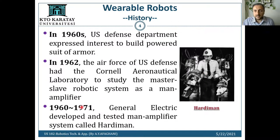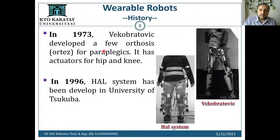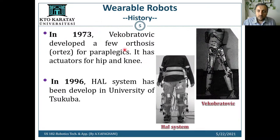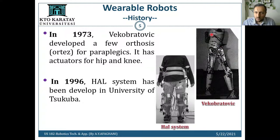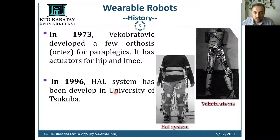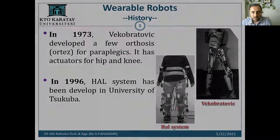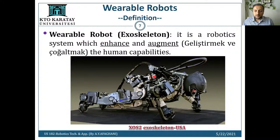In 1973, a country — I think Czechoslovakia, somewhere in Europe — developed active orthoses for paraplegics, for disabled people. It had actuators for hip and knee. In 1996, the HAL system was developed at the University of Tsukuba in Japan — the university I graduated from — for rehabilitation and human assistance. Now let's go to definitions and types.